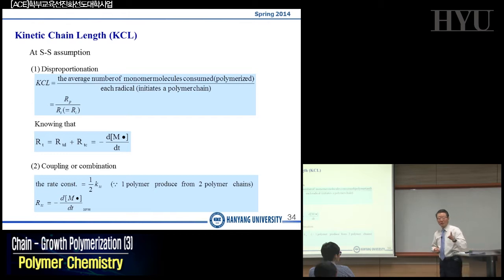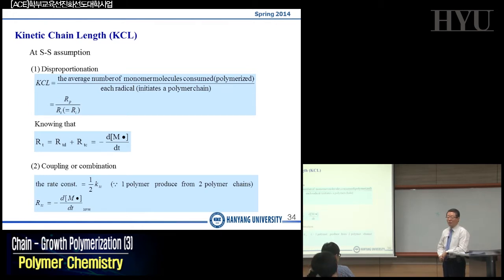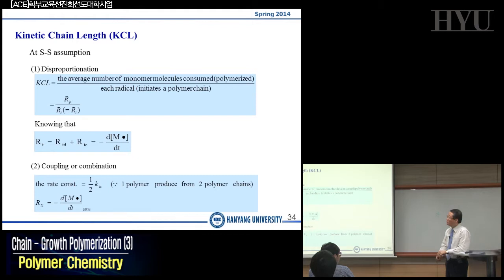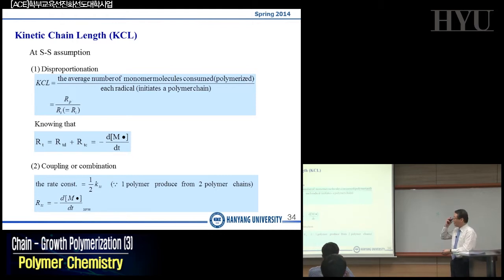The kinetic chain could be the same as the physical chain in the case of disproportionation, whereas you have doubled the kinetic chain length where you have a physical chain in coupling or combination reactions. So we have derived the equation for how we can define the kinetic chain length, and we have to assume that we have a steady state.